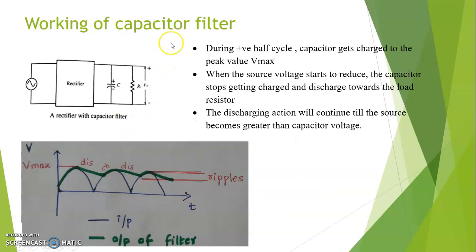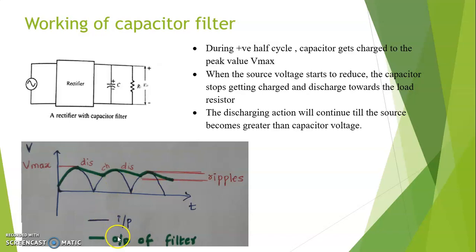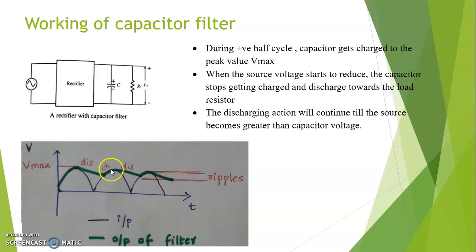Now we will study the working of a capacitor filter. As you can see in the figure, the capacitor is connected in parallel to the resistor. There are two waveforms shown here: the input waveform in blue and the output waveform in green. The input waveform is the output of the bridge rectifier, and the green waveform is the output of the capacitor filter.